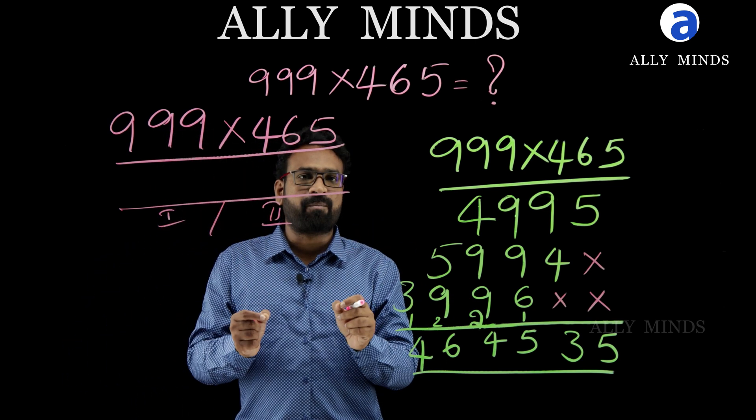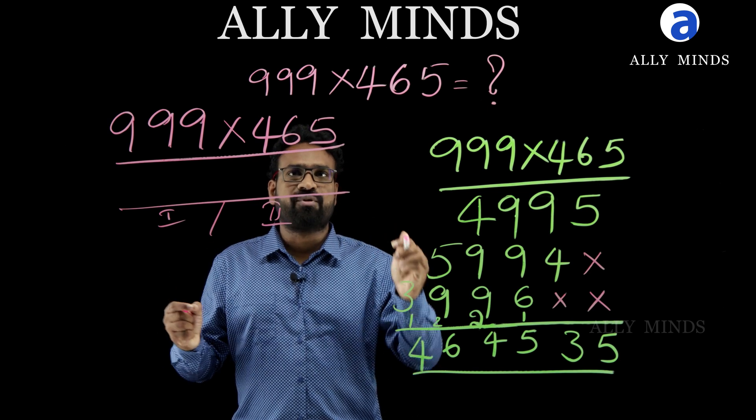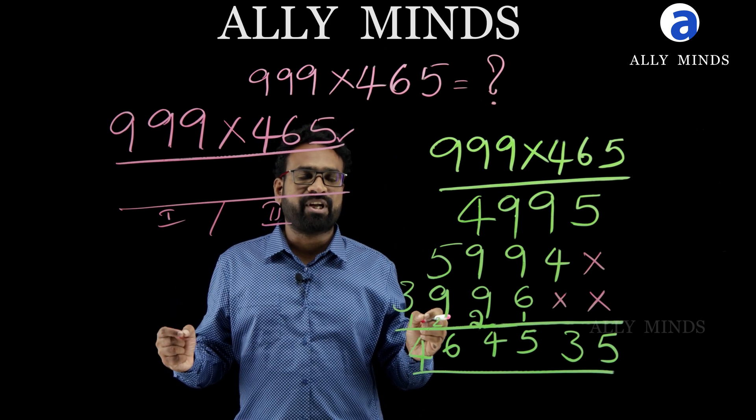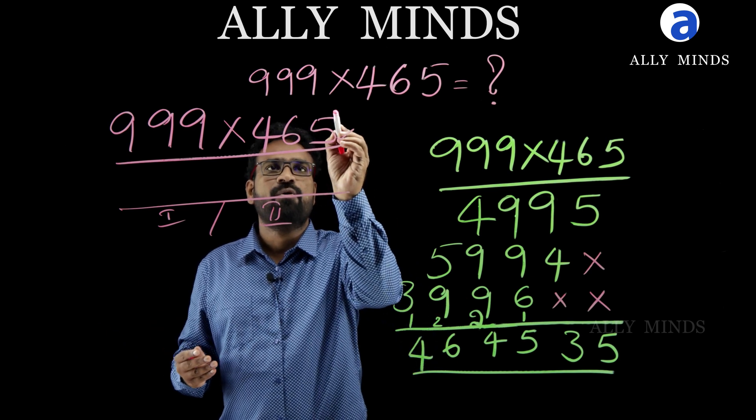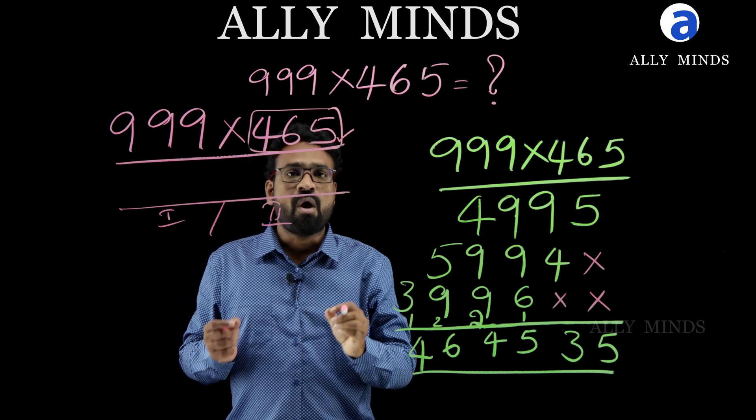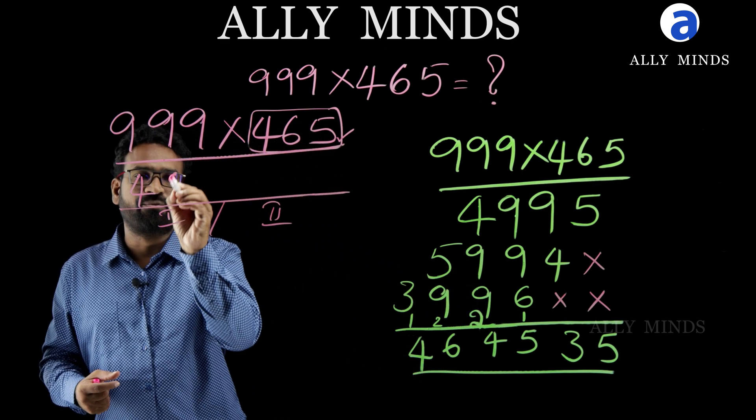We have to apply Eka Nunena Purvena for this number. Eka Nunena Purvena means we have to take one less than the number what we are having. Here, we got 465. So, one less than this 465 is 464.